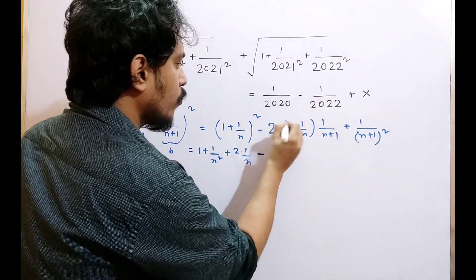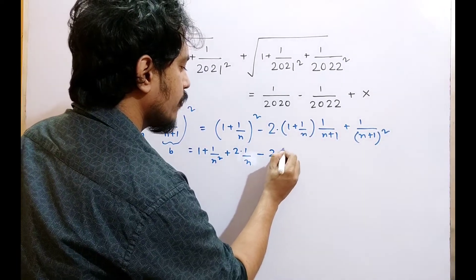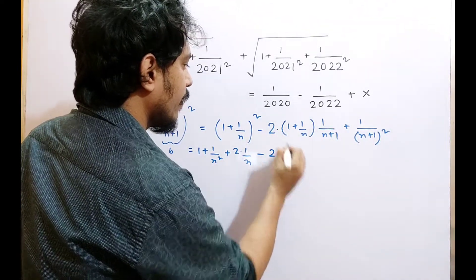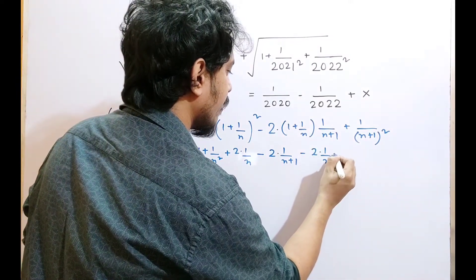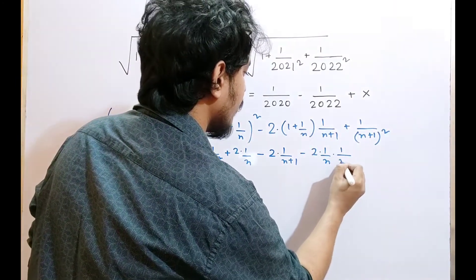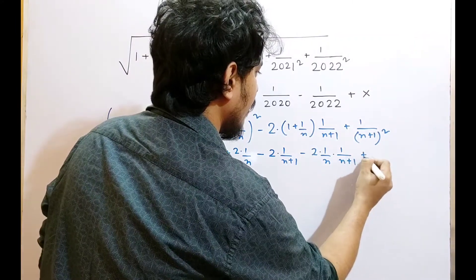This result is minus 2 into 1 by n plus 1. We multiply the result, 2 into 1 by n into 1 by n plus 1. Leave as it is.